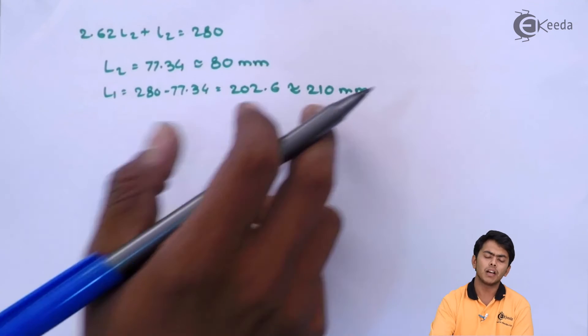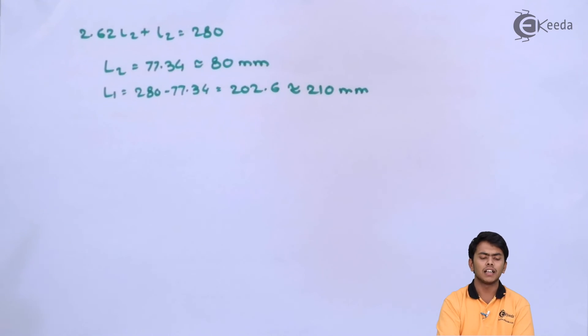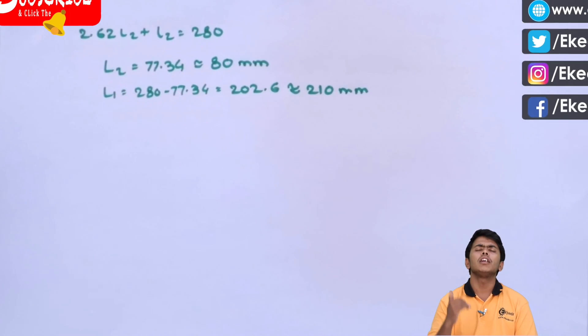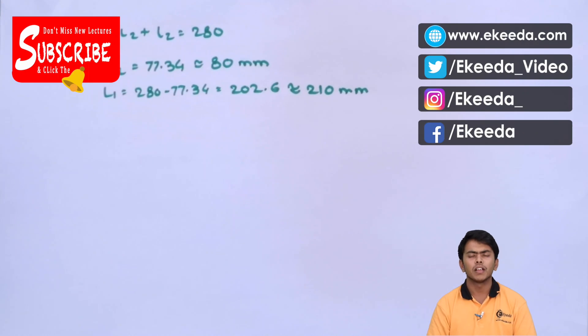So we have designed the whole connection. The basic steps are: first, determine the size of weld; second, determine the design strength of weld; third, determine the strength of weld per mm; fourth, length of weld required; fifth, arrangements. So we will follow these steps to tackle any problem.